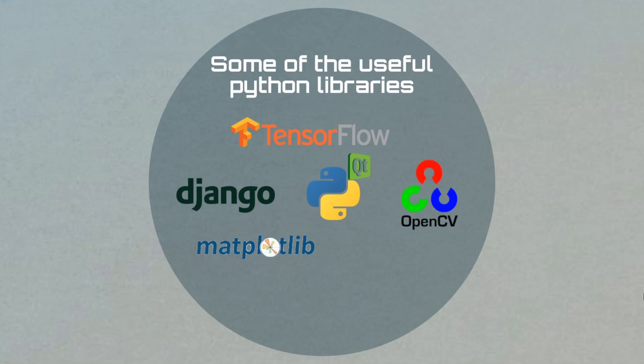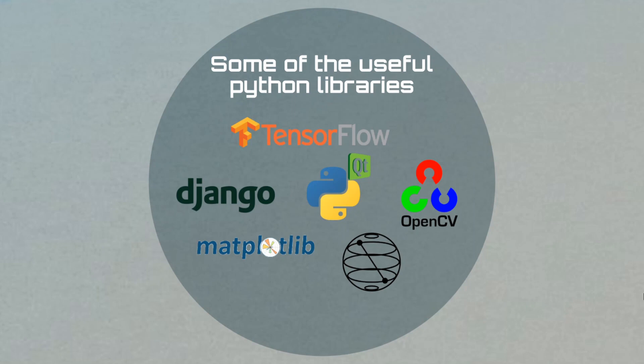Next is OpenCV, a computer vision library. You can do Face Detection, Object Detection, Computer Vision — whatever you want — with this library. It makes computer vision tasks easier. There is also Qiskit, a famous library for quantum computing. Quantum computing is becoming more famous, and in the future it will be even more popular.